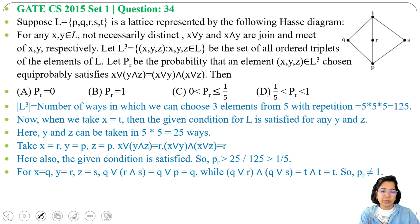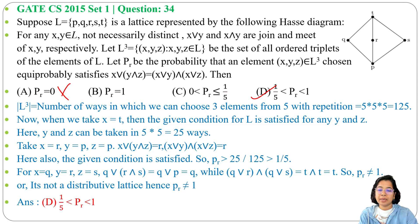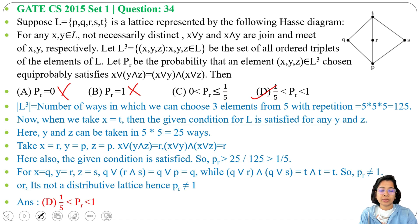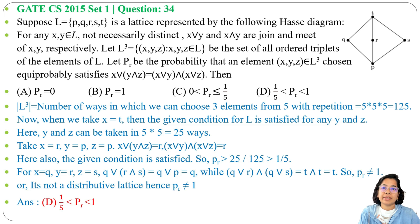Therefore, the probability is between 1/5 and 1 — it's not 0 because for some triplets it is satisfied, and it's not 1 because this is not a distributive lattice. It's also not in the range (0, 1/5] because we've shown it exceeds 1/5. So the answer is Option D: probability is greater than 1/5 and less than 1. Please go through the distributive lattice lecture for more details, and if this was helpful, please like, share, and subscribe.